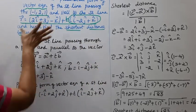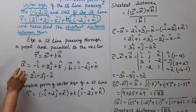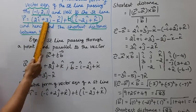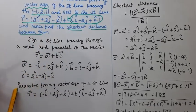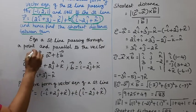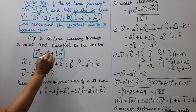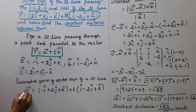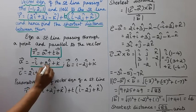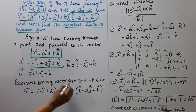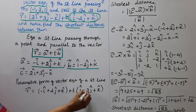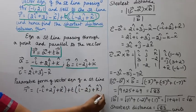a vector is the point vector. b vector is the direction vector: i-cap minus 2j-cap plus k-cap.